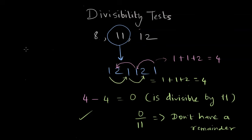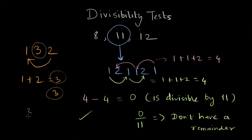Let's take another example: 132. In this case, the alternate digit sum is 2 plus 1, which is 3. The other pair of alternate numbers only includes 3. So 1 plus 2 equals 3, and the other number is 3. The difference is again 0, and 0 is divisible by 11. So 132 is also divisible by 11.